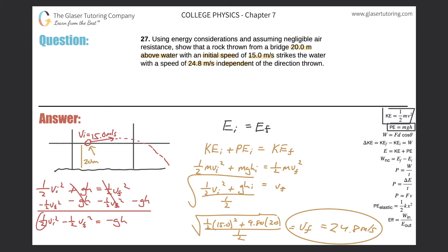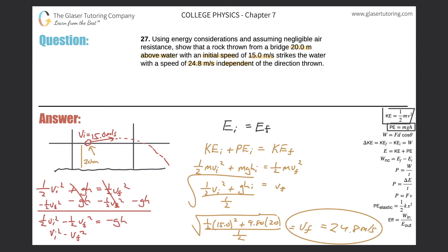Now I'll factor out one-half from both terms on the left, then divide both sides by one-half — which is the same as multiplying by two. This gives: v_i squared minus v_f squared equals negative 2gh.